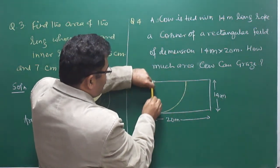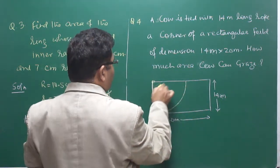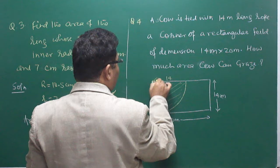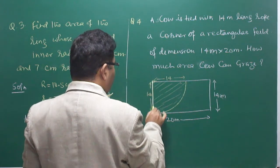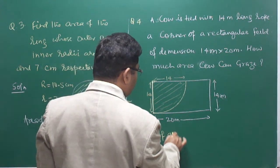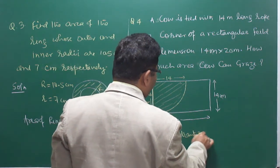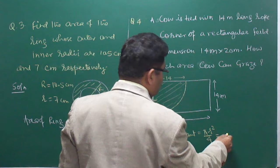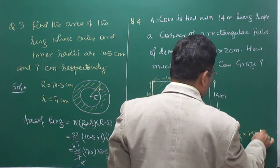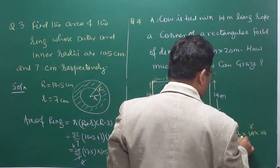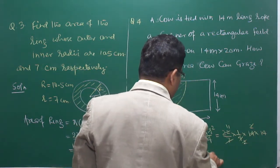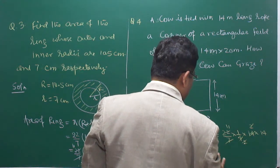The cow can graze this quarter-circle area. We need the area of a quadrant, which is πr²/4. So: (22/7) × (1/4) × 14 × 14. Simplifying: 7 cancels into 14 giving 2, and 4 cancels into the remaining 14 giving 2 times 11. Result: 14 × 11 = 154 square meters. That is the area the cow can graze.